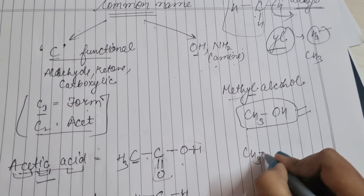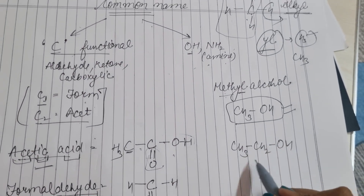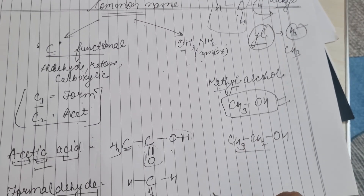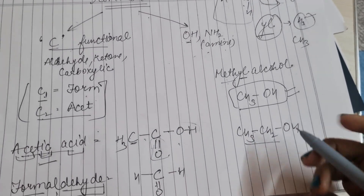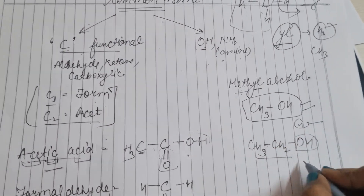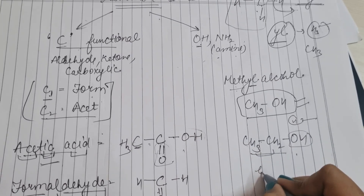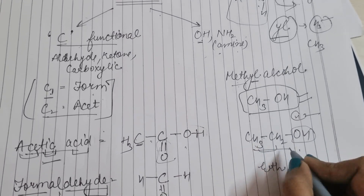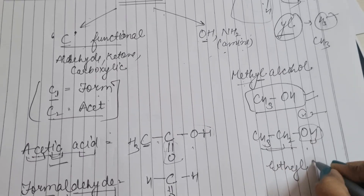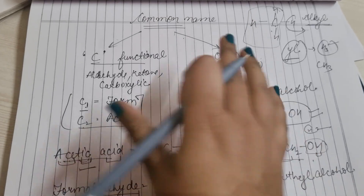Ethyl alcohol बनाते हैं: CH₃-CH₂-OH। Ethane का formula CH₃-CH₃ है — एक hydrogen गया, उसकी जगह OH आया। 'ith' मतलब 2 carbon, यह alkyl group हो गया — Ethyl। पीछे alcohol लगा — Ethyl Alcohol। This is about the naming of common names।